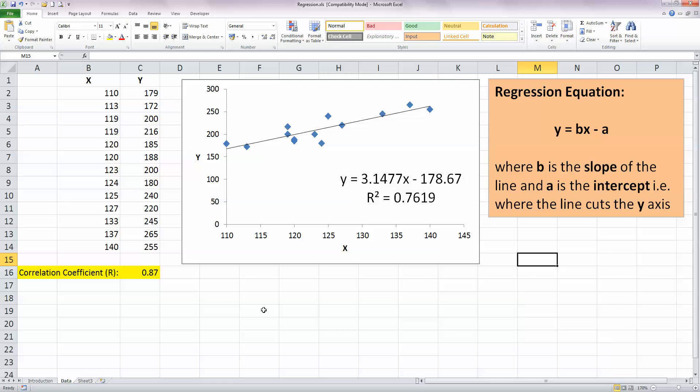So now we have our regression equation. We know from our r-squared value that there's a strong correlation between these two values. We have our line of best fit, and we can now use this information to predict values of y based on values of x. So that's simple linear regression in Excel 2010. I hope you found this video useful. Thank you for your attention.